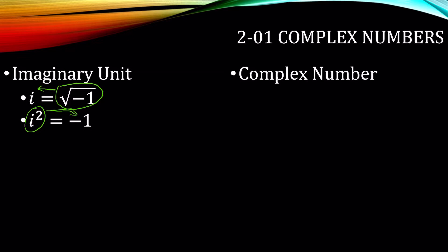Complex numbers are in the form a plus bi, where a is the real part and bi is the imaginary part. So complex numbers are the combinations of real and imaginary.